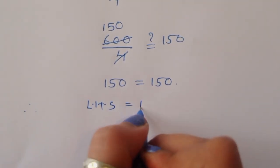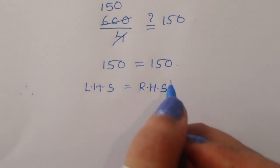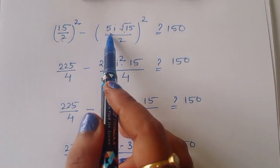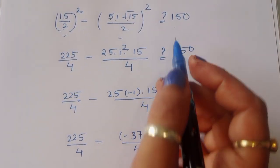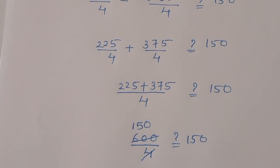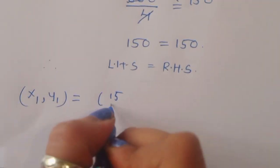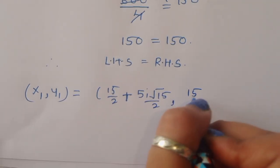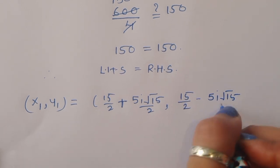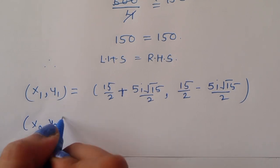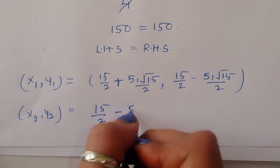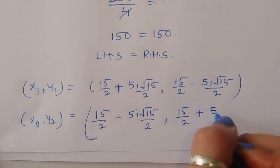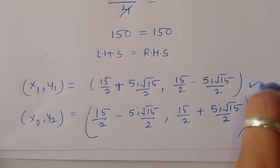Therefore the verified correct solution is: x1 equals 15 by 2 plus 5i square root of 15 by 2, with y1 equals 15 by 2 minus 5i square root of 15 by 2; and x2 equals 15 by 2 minus 5i square root of 15 by 2, with y2 equals 15 by 2 plus 5i square root of 15 by 2. Thank you.